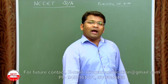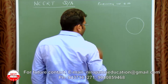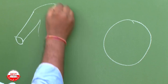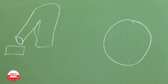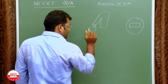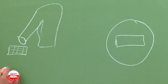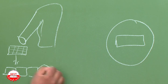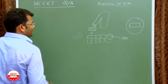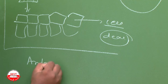Robert Hooke developed a primitive microscope and used it to observe cork — a dead plant material. He saw some complex structures present in it and gave them the name 'cell.' So the cell was discovered by Robert Hooke. The first living cell was discovered by Antony van Leeuwenhoek.